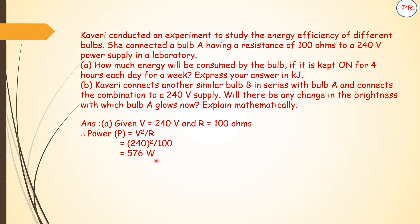Power is nothing but energy per unit time. So energy consumed by bulb A will become power multiplied by time. How much time is given? 4 hours. This has to be converted into 60 minutes and each minute is 60 seconds. Therefore we will write it as 576 multiplied by 4 hours multiplied by 7, because there are 7 days in a week, and each hour is 60 minutes and each minute is 60 seconds.